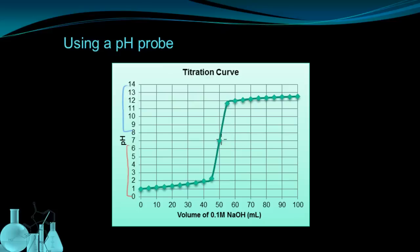Now this titration curve is really useful because right here, the middle of this sort of upswing, that is the equivalence point. And so for this example of titration, it took 50 milliliters of NaOH to fully titrate the unknown acid. The pH probe is going to give you a more accurate picture of how much volume was needed to reach the equivalence point.